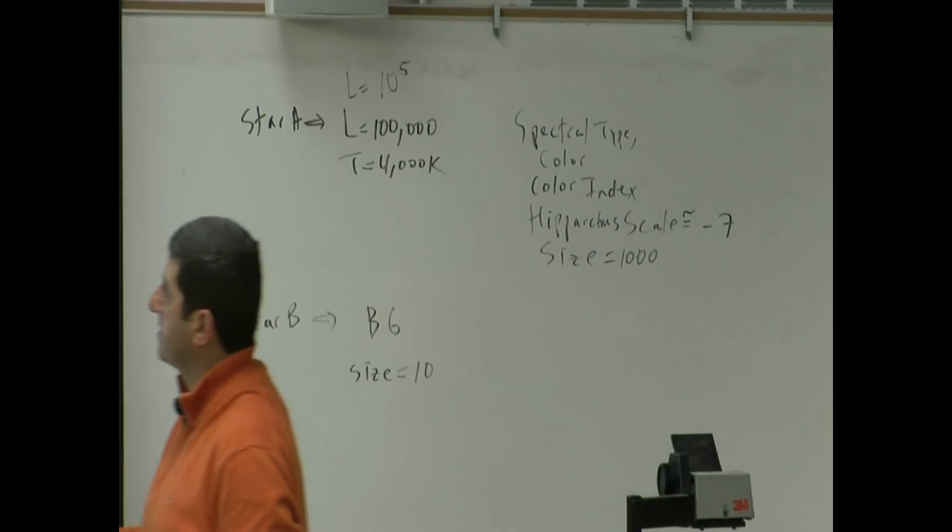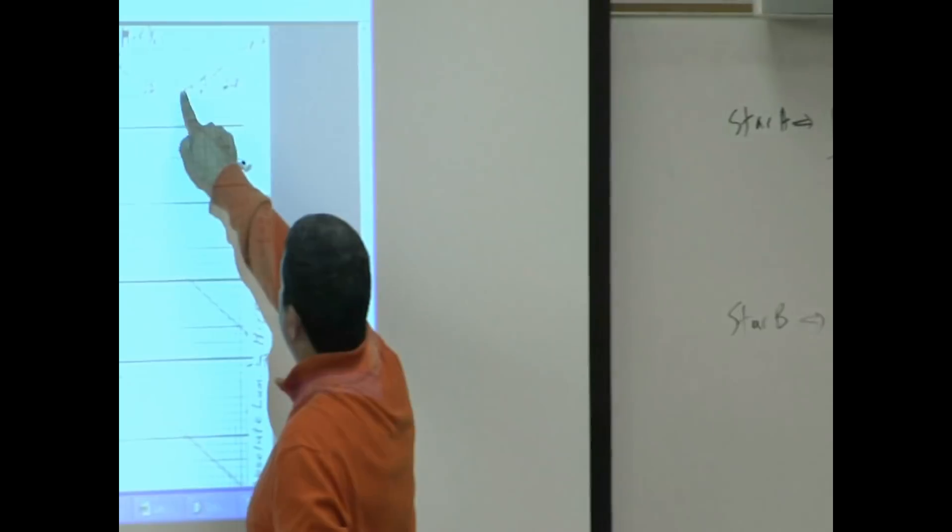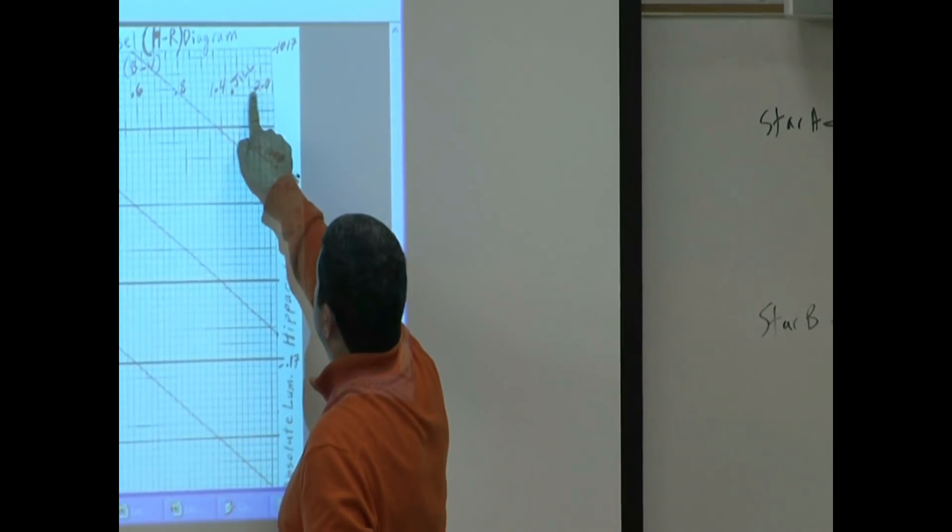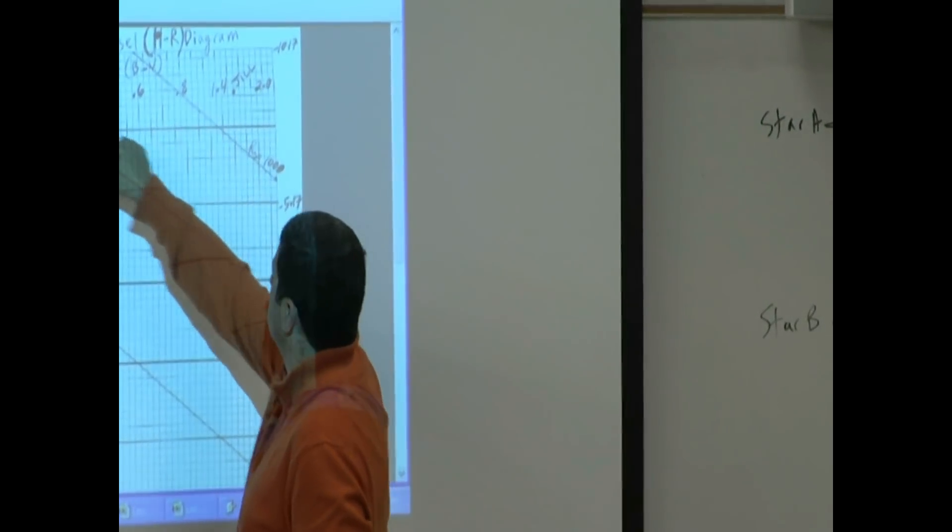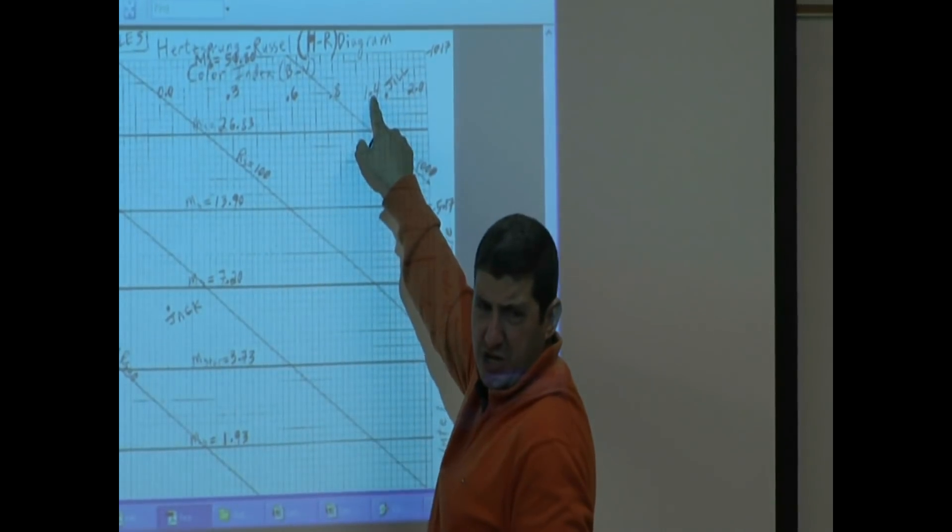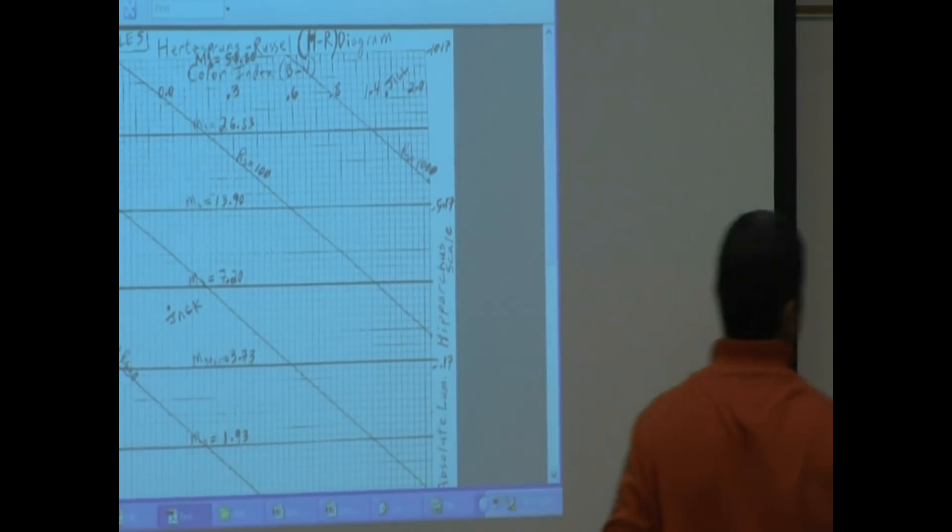What's its color index? 1.4. See? 2.0, 1.4, 0.8, 0.6. So it's going to look like a red-orange star. So its color index would be 1.4.